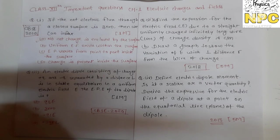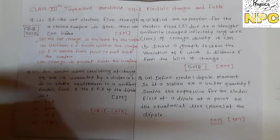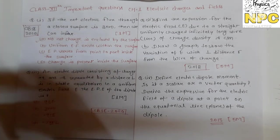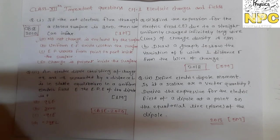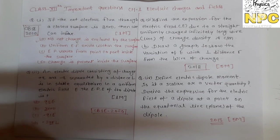Next, question number four: define the electric dipole moment — is it a scalar or vector quantity? Derive the expression for the electric field of a dipole at a point on the equatorial line. You need to give the definition, write the formula, state whether it is scalar or vector, and do the complete derivation for the electric field due to a dipole on the equatorial line. This was a 5-mark question that appeared in 2013.